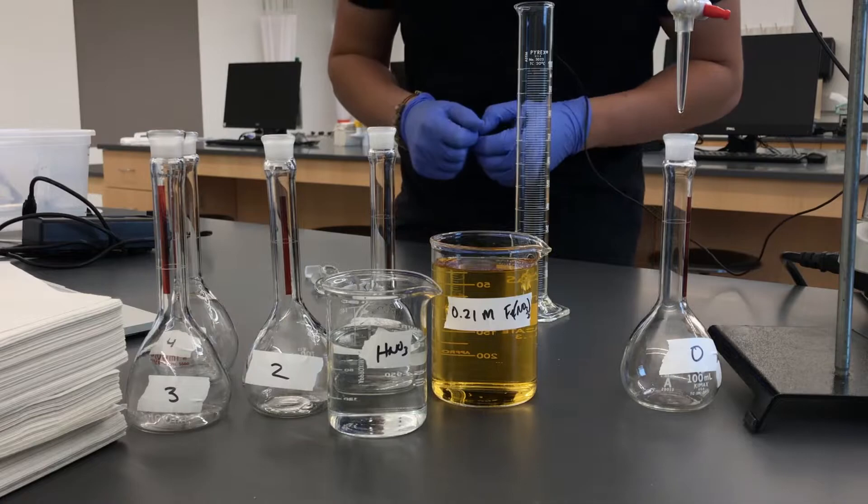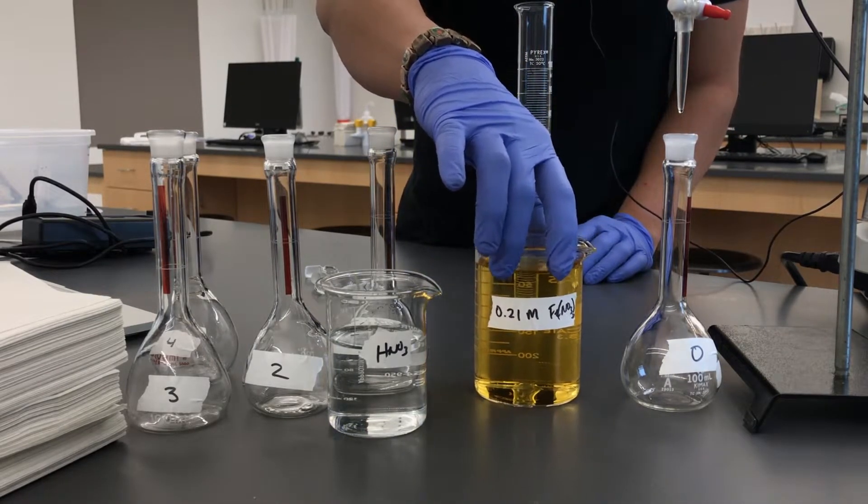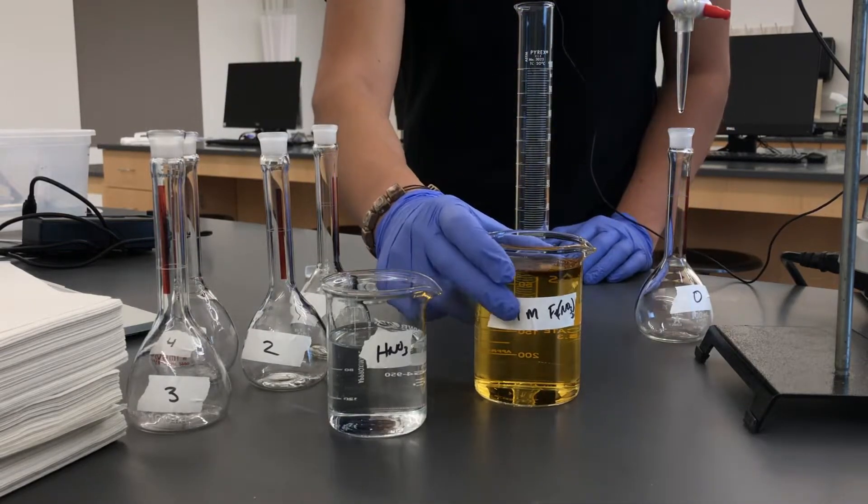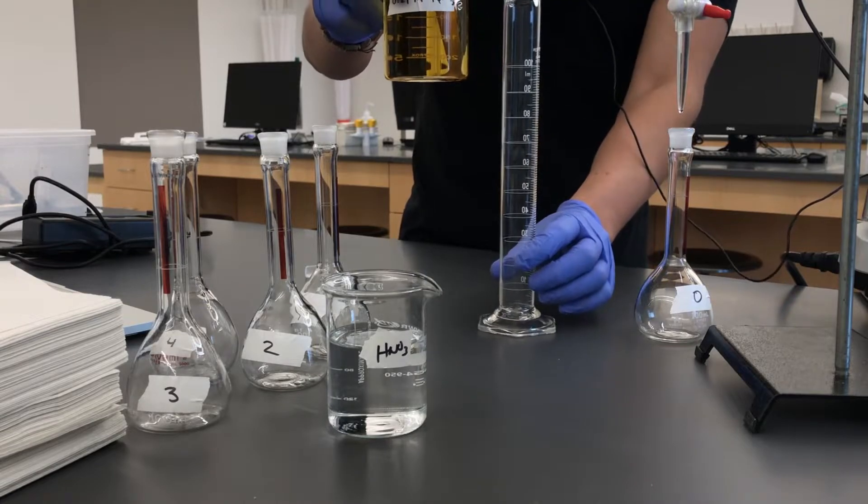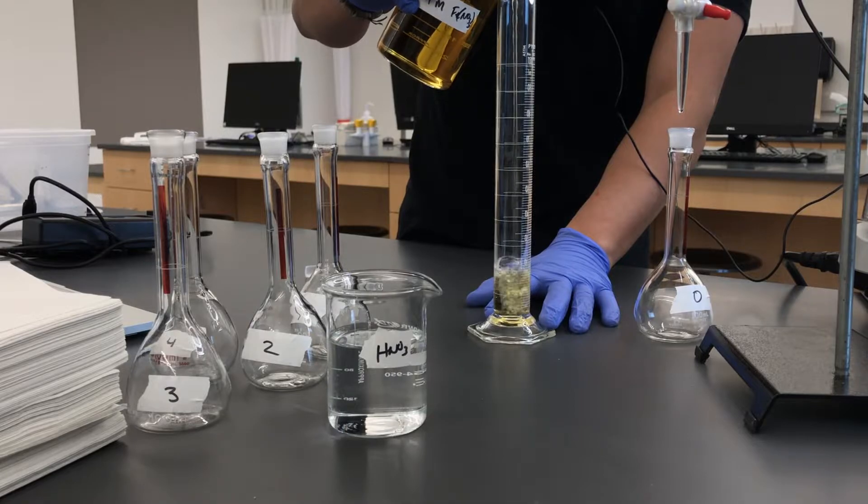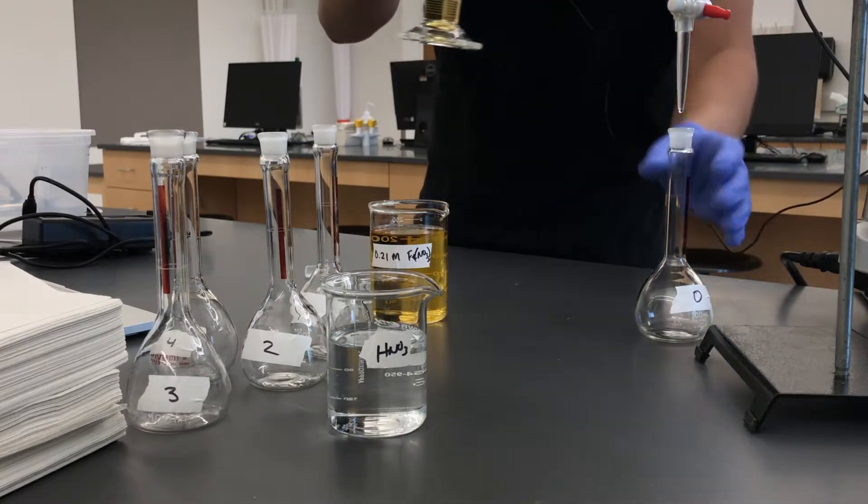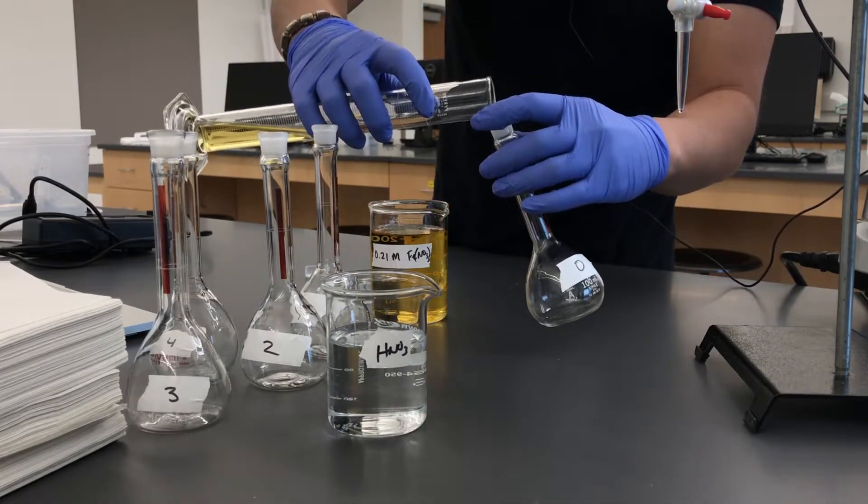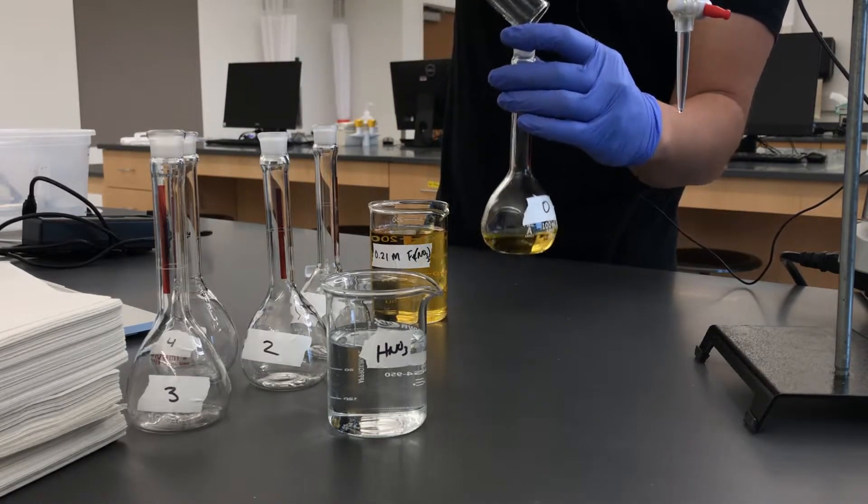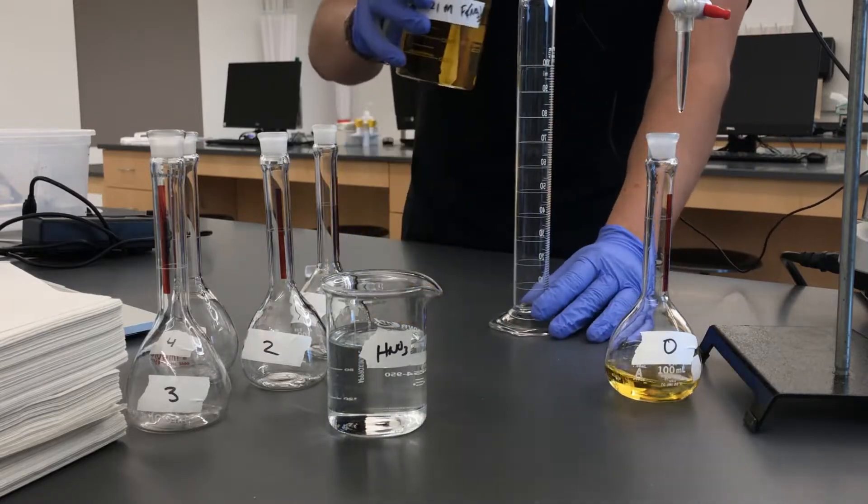First thing we've got to do is add about 25 mils of our ferric nitrate to each of the five volumetric flasks. So the easiest way to do that is going to be to take some of this ferric nitrate and measure out about 25 mils in the graduated cylinder. That's pretty good. Let's add it into the first one which is our 0 and then we'll repeat for the other 4.